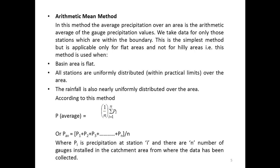The first one is the Arithmetic Mean Method. In this method, the average precipitation over an area is the arithmetic average of the gauge precipitation values. We take data only for those stations which are within the boundary. This is the simplest method, but is applicable only when the basin area is flat, all stations are uniformly distributed over the area, and the rainfall is also nearly uniformly distributed.